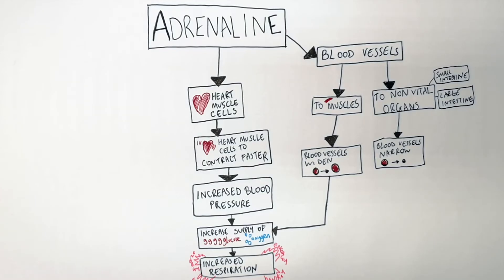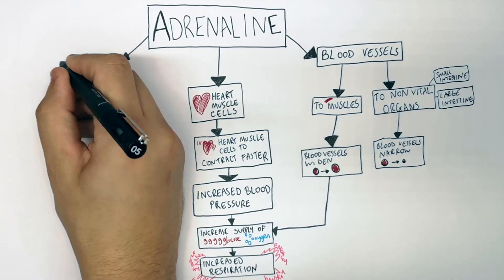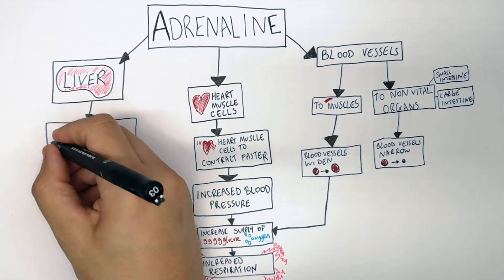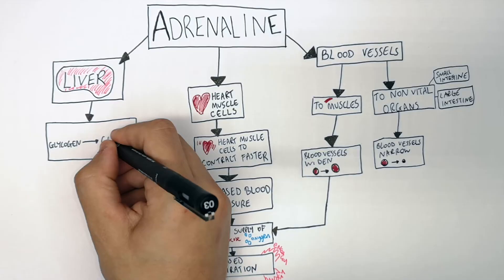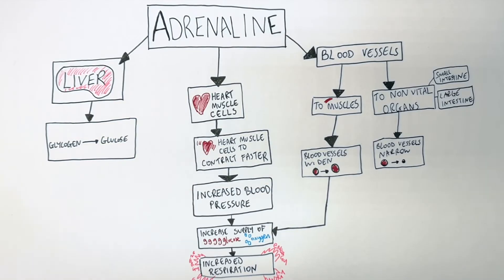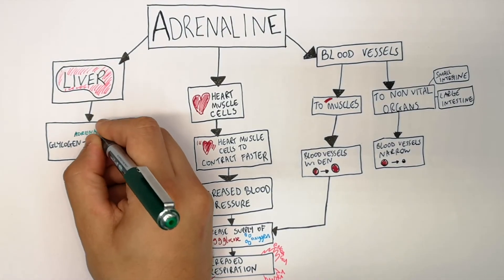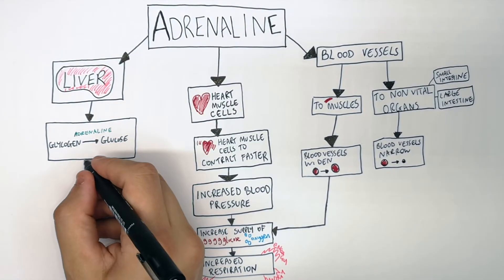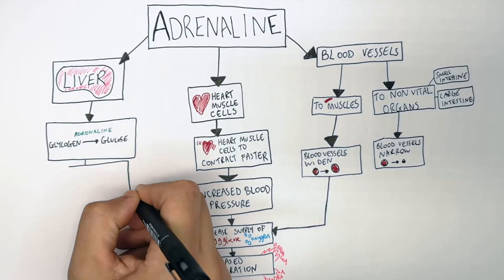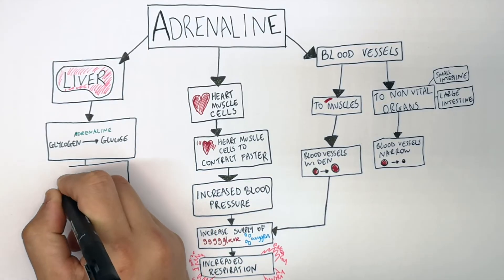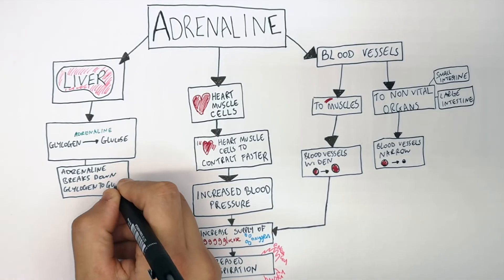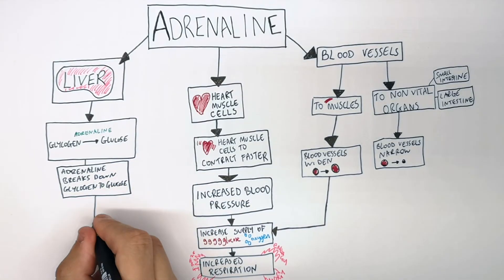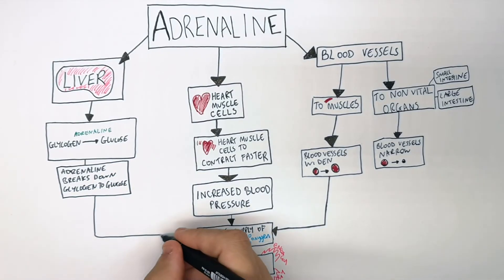Adrenaline is also transported to the liver, whereby it converts glycogen stored in the liver to glucose. Adrenaline helps break down glycogen into glucose.